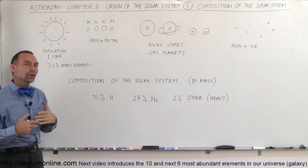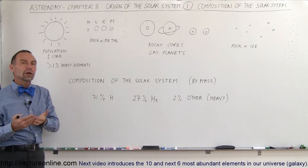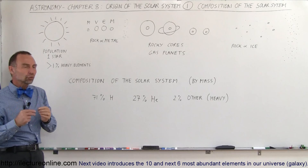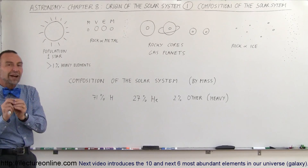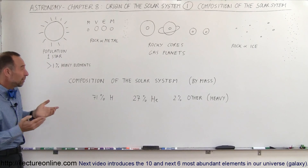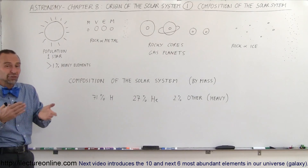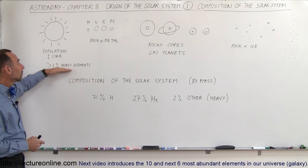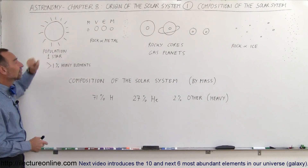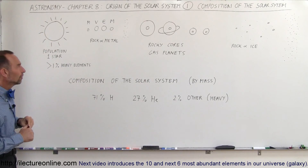That is somewhat unusual because most stars — what we call population 2 stars — have only a very small fraction, typically less than a tenth of a percent or somewhere in that neighborhood, of heavy elements. So our Sun is kind of an unusual star as far as that is concerned.